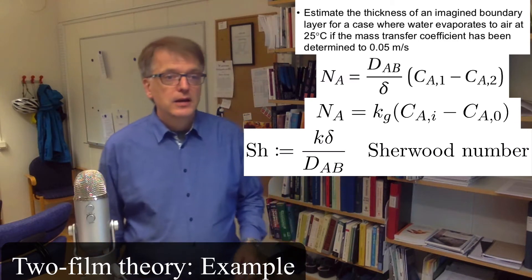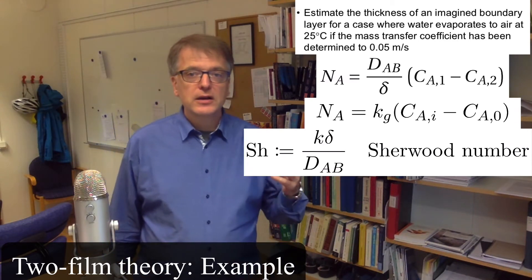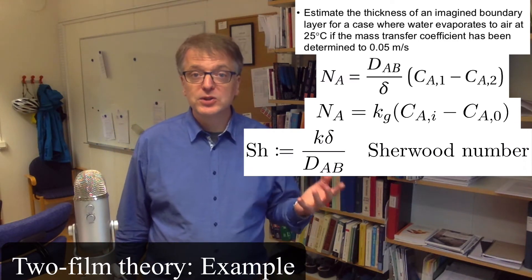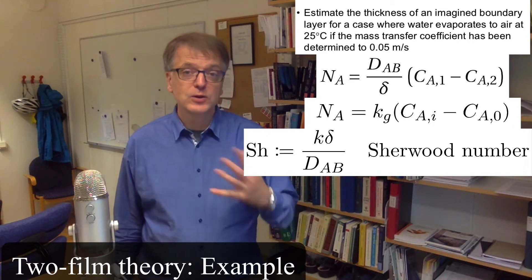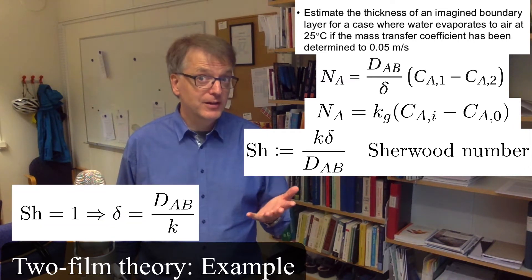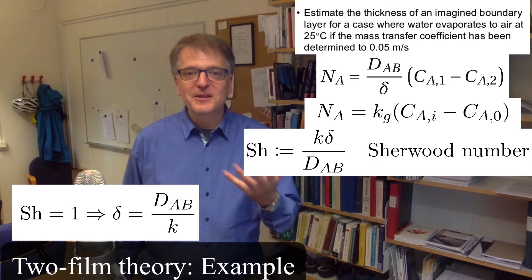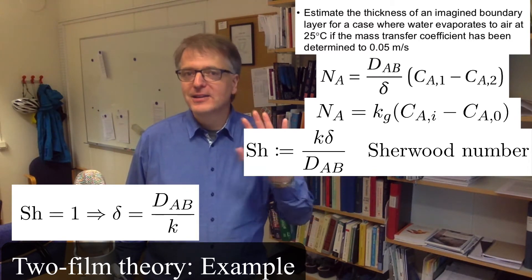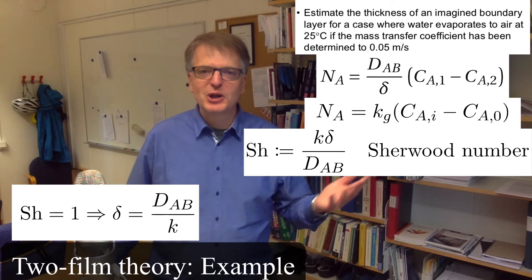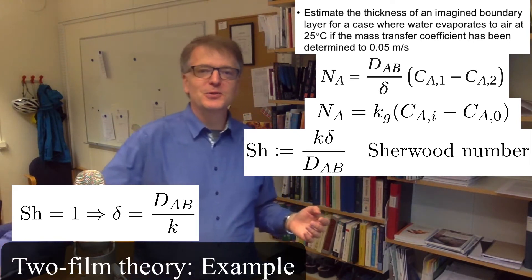And we will assume now that Sherwood equals 1 so that the two-film theory fits perfectly. But hey that's not really the case, but we don't have any handle on that so okay let's just assume that it's probably somewhere similar to 1.